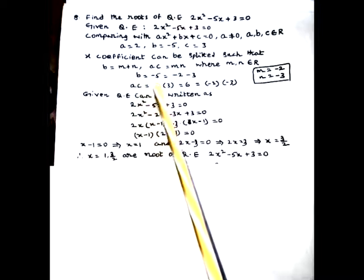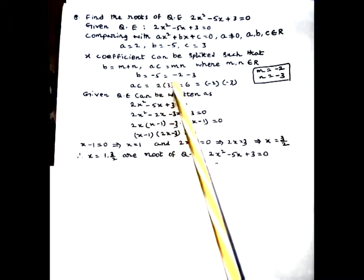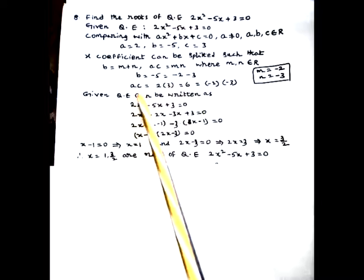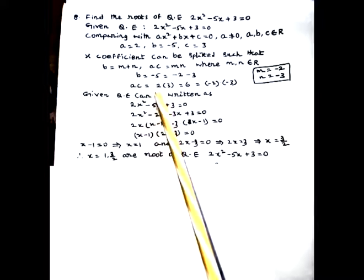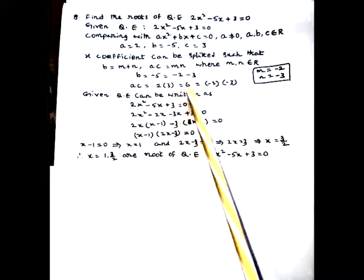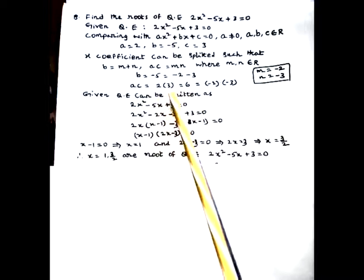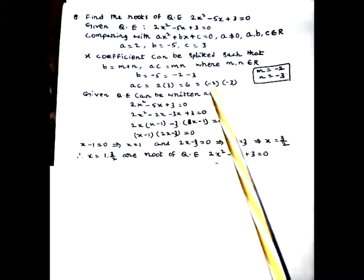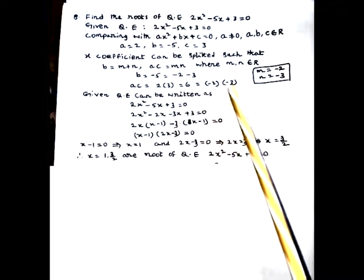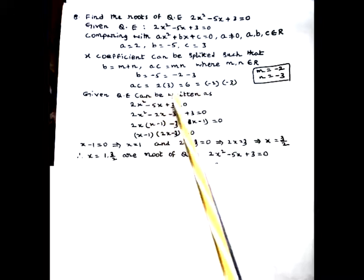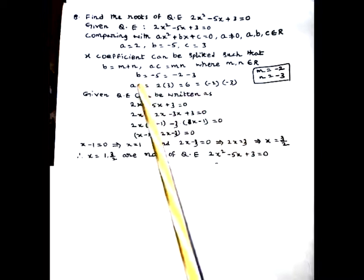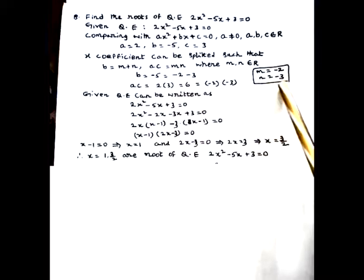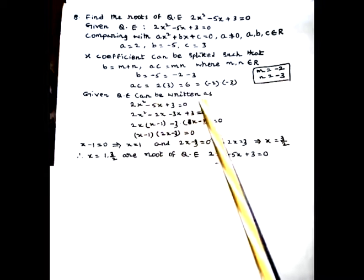b = -5 can be written as the sum of -2 and -3. The product ac = 2 × 3 = 6, which can be written as (-2) × (-3) = 6. So ac is written in the form mn, and b is written as m + n, where m = -2 and n = -3. The given quadratic equation can be written in split form.